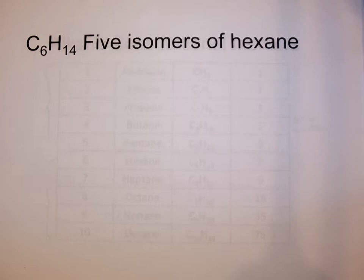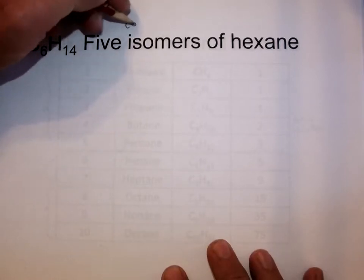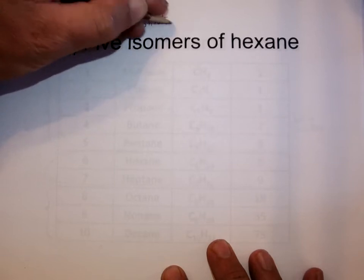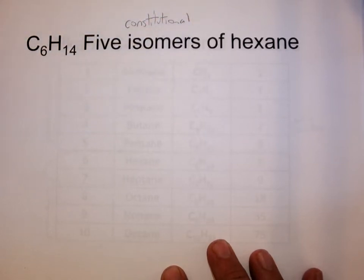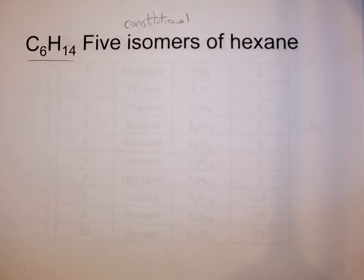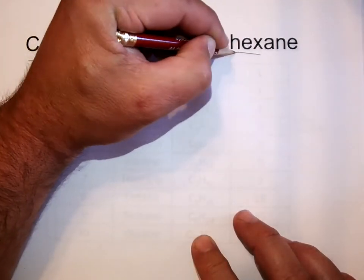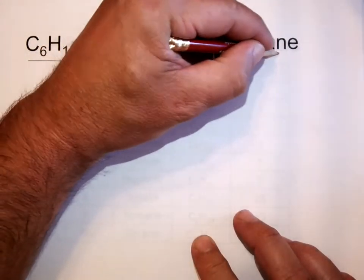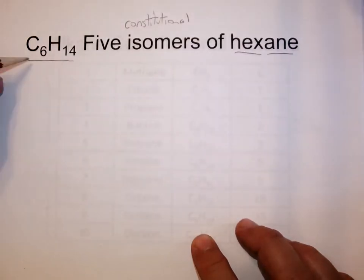I'm recording another little video for CHEM 230. We've been talking about different constitutional isomers of alkanes, where the atoms in the molecule can be connected in different ways, giving us different molecules with the same formula. One really good instructional example is to look at hexane — hex means six — so six carbons in a saturated hydrocarbon: C6H14.